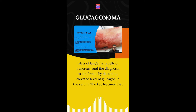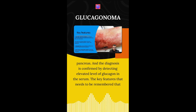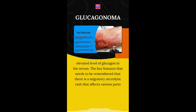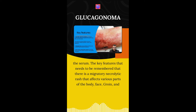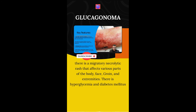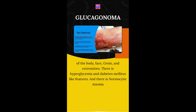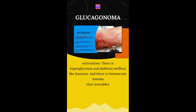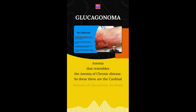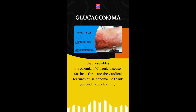The key features that need to be remembered: there is a migratory necrolytic rash that affects various parts of the body — the face, groin, and extremities. There is hyperglycemia with diabetes mellitus-like features, and there is normocytic normochromic anemia that resembles the anemia of chronic disease. These three are the cardinal features of glucagonoma.